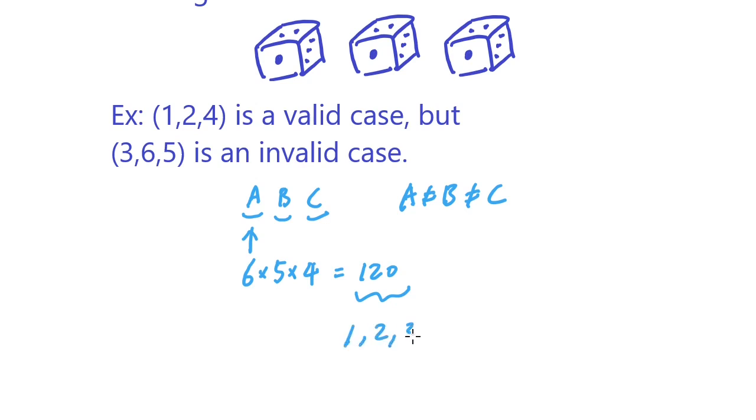Out of these 120 sequences, you can imagine sometimes we get one two three, but other times we can get three two one. Well, one two three is a valid case, but three two one is an invalid case. So we want to answer the question: out of the 120, how many of them are valid and how many of them are invalid?